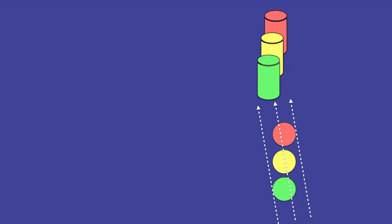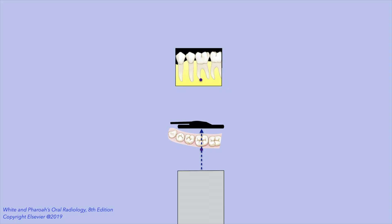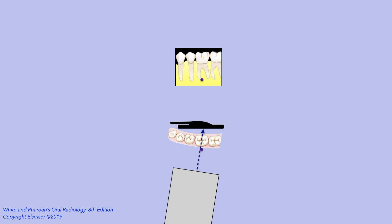Changes in the projection of structures as you change the angle is the basis for this technique. Now let's consider an object that is located buccal to the mandibular first molar. In a standard projection, this object is superimposed over the apex of the mesial root of the mandibular first molar. However, when we take a secondary radiograph with a mesial angulation, the projection of this image appears to move distally — that is, in the opposite direction of the tube movement.